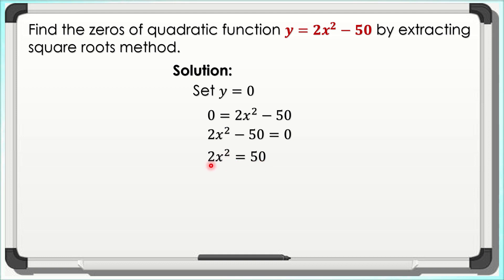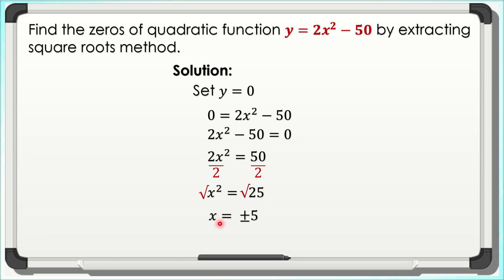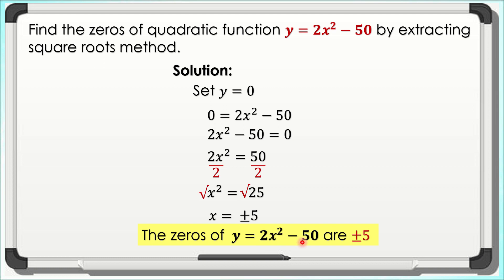We divide both sides by 2 to get x² alone on the left side. So 2x² ÷ 2 = 50 ÷ 2, which gives x² = 25. We then apply the square root property, extracting the roots of both sides: √(x²) = √25, giving x = ±5. Therefore, the zeros of y = 2x² − 50 are positive and negative 5.